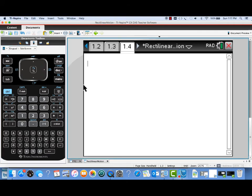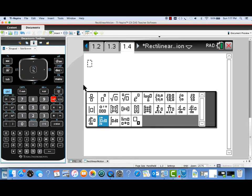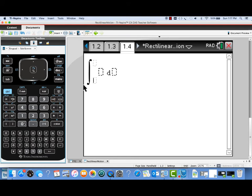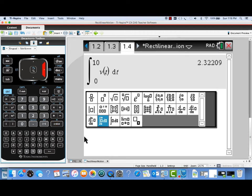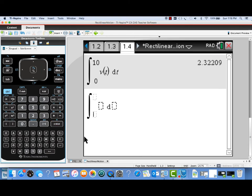Now the final part of our question asked us to calculate the total displacement and the total distance traveled by the object. To find total displacement, we'll integrate the velocity over the time interval. So I'm going to integrate from 0 to 10, v of t dt. This is going to give us the net change in the position of the object between the beginning of the time interval and the end. So as I integrate 0 to 10, v of t dt, I'm ending up with a value that's equal to 2.322. That means our object ended up 2.322 units above where it started.